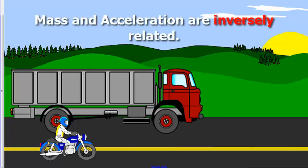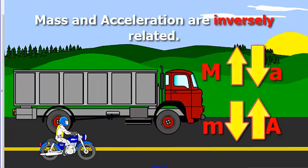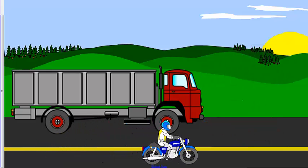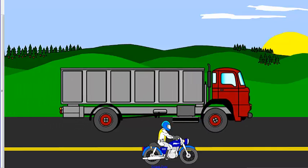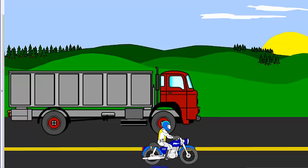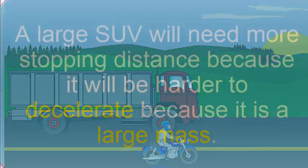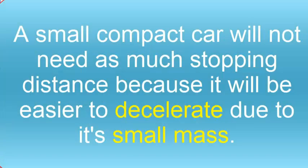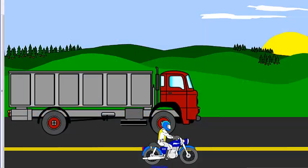Mass and acceleration are inversely related. The larger the mass, the lower the acceleration. And the smaller the mass, the greater the acceleration. It's a lot easier for this motorcycle to stop suddenly at a red light, and that's because of its mass. It's easier to decelerate, as opposed to the semi-truck. Since it's such a large mass, it's going to be harder for the semi-truck to stop or to decelerate. You need to think about this when you start learning how to drive and give yourself enough stopping distance. If you're driving a large SUV, you need to provide more stopping distance when you get to the red light, as opposed to driving a smaller car. The bigger the mass, the harder it is to change the acceleration — at rest or if it's already moving.